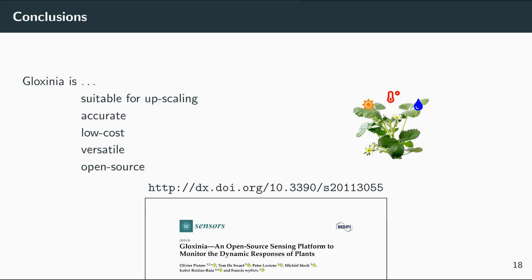So it would be fully adapted to growth chamber dimensions and possibly upscaled to greenhouses. A question about the price of the Gloxenia boards: the price varies between 45 and 75 euros per board. The DCO board is the cheapest at about 45 euros, and the Planalta board is the most expensive because it has the driver and receiver, requiring a bit more components.